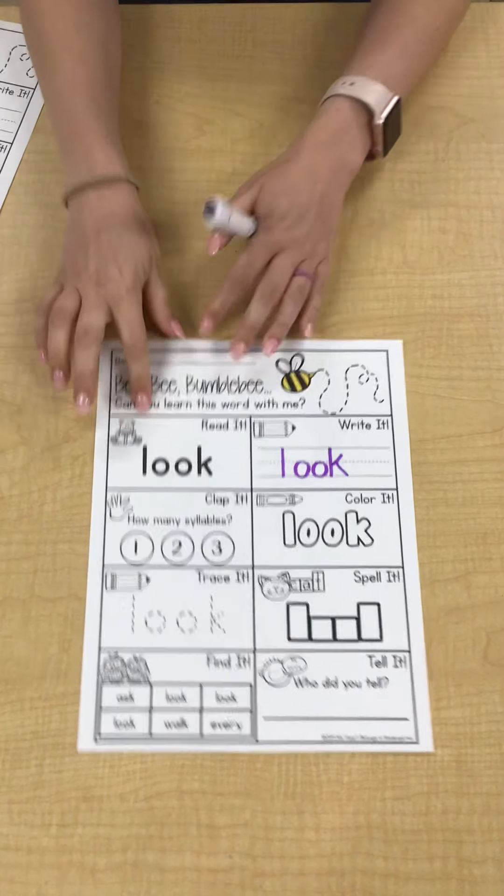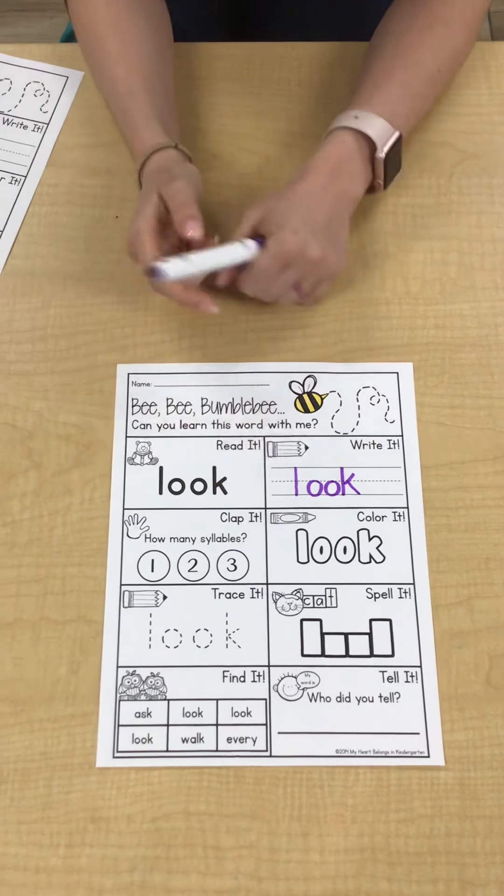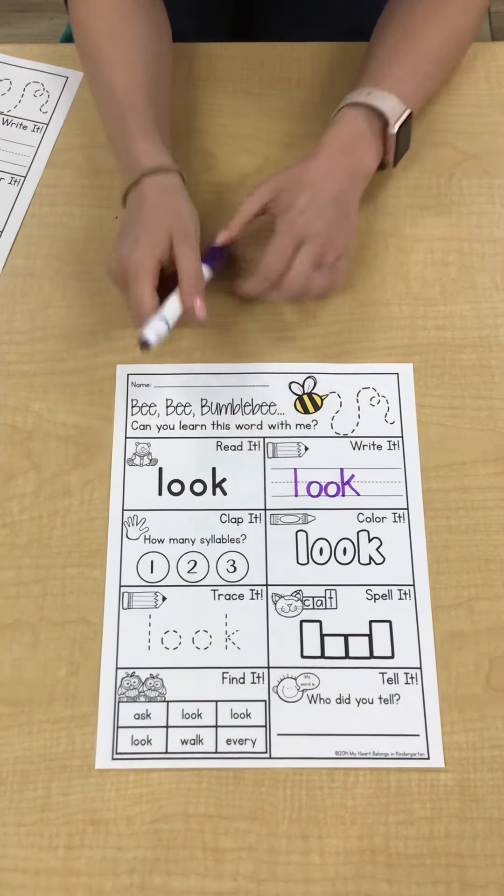You have look, and, the, and like. These are your sight words. Pick one or all of them. I'm going to do one with you to show you exactly how it's done.